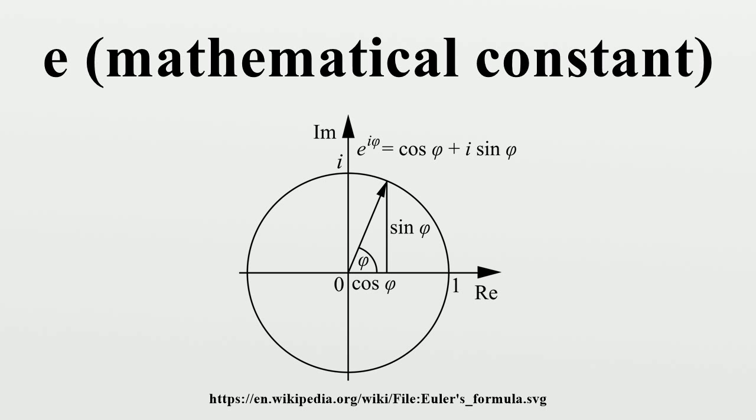The first references to the constant were published in 1618 in the table of an appendix of a work on logarithms by John Napier. However, this did not contain the constant itself, but simply a list of logarithms calculated from the constant.